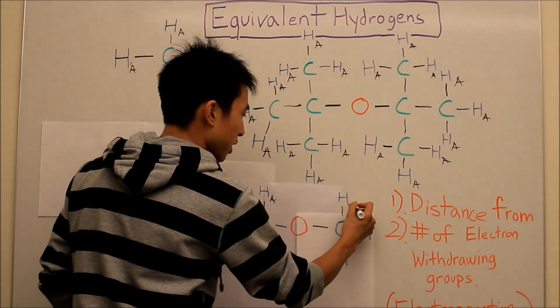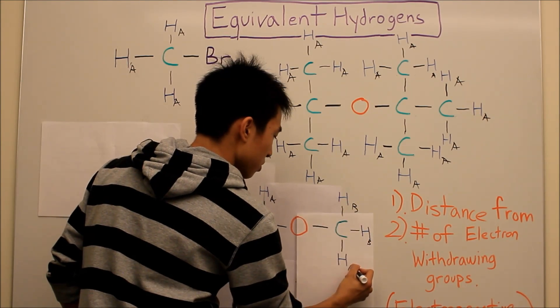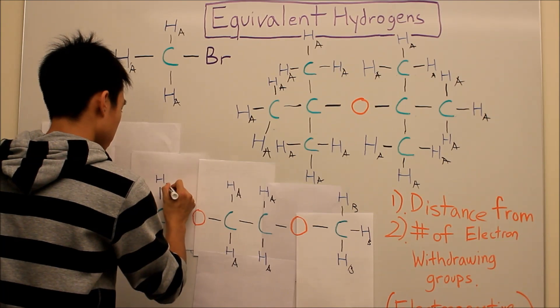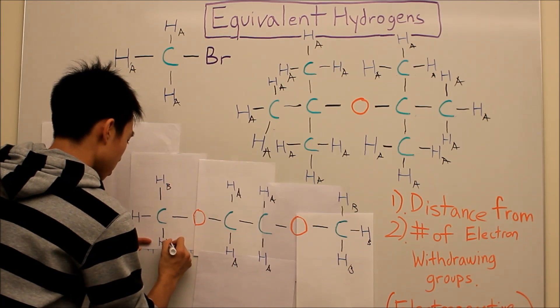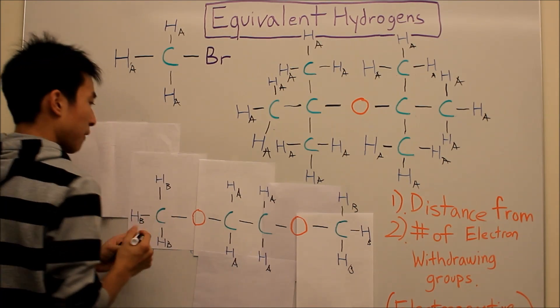So the middle hydrogens would be labeled HB, HB, HB, HB — all HB — distinct from the outer HA hydrogens.